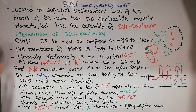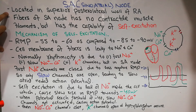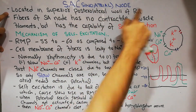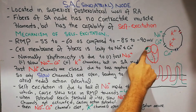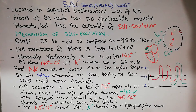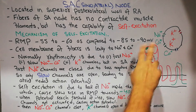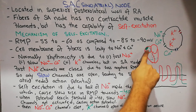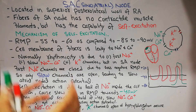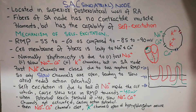The SA node is located in the superior posterior lateral wall of the right atrium, just at the level of the opening of the superior vena cava. The heart has two atria and two ventricles — right and left atria pump blood into the ventricles, the right ventricle pumps blood into the lungs, and the left ventricle pumps blood into the whole body, and the cardiac cycle continues.